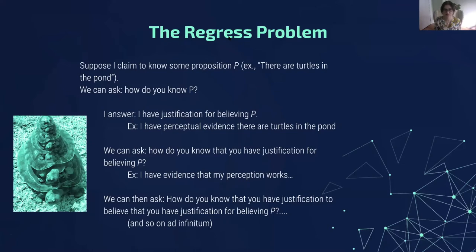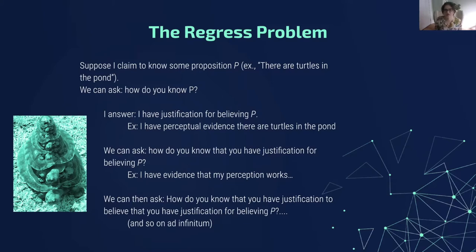Let's go over the regress problem. The regress problem says: suppose I can claim to know some proposition P — for example, 'there are turtles in the pond.' We might ask, how do you know P? And I answer, I have justification for believing that there are turtles in the pond — I have perceptual evidence. Then the person asks, how do you know that you have justification for believing you have perceptual evidence? And I say, well, I have evidence that my perception works. Then someone asks how you know you have justification for believing that, and so on and so forth. It just goes on forever. So we've got turtles all the way down.